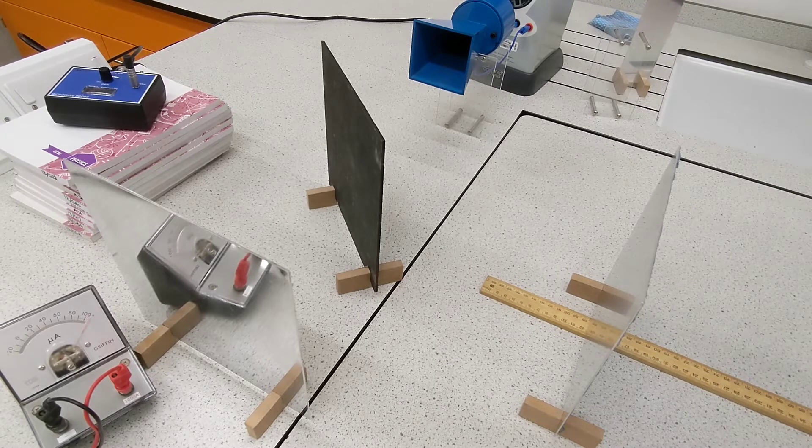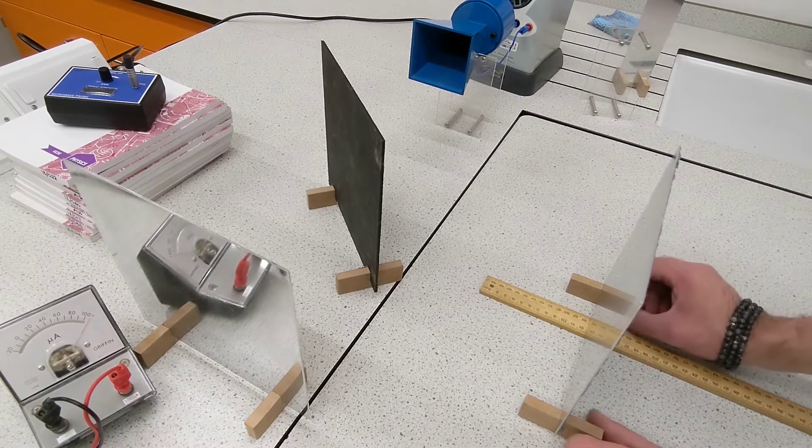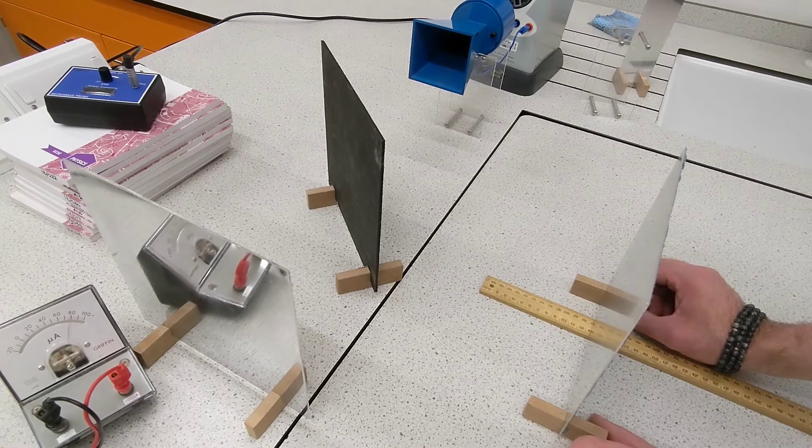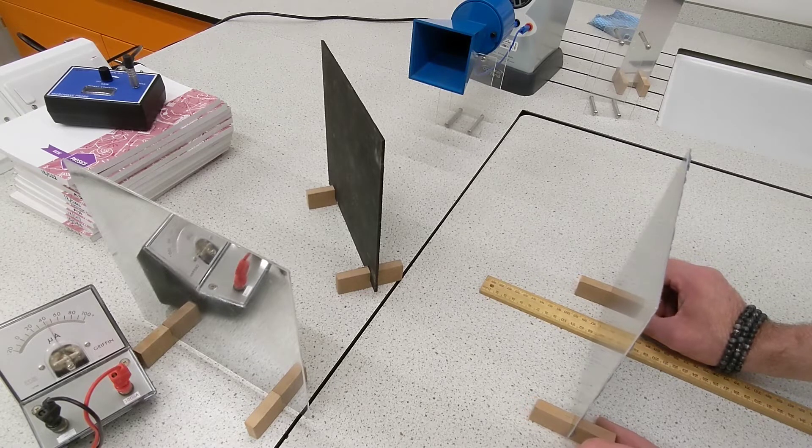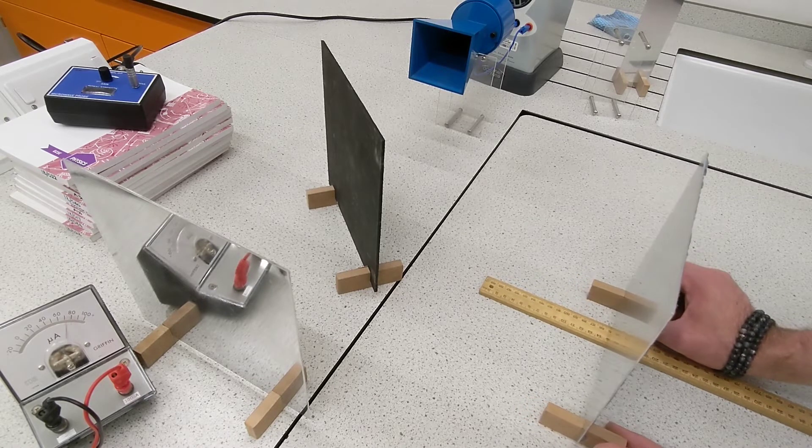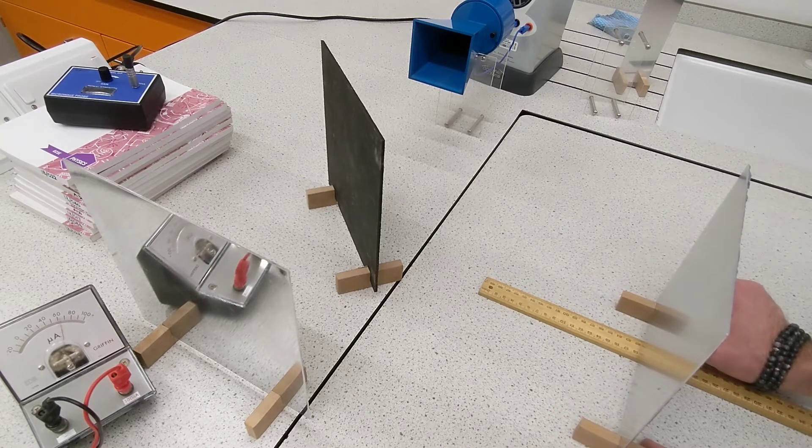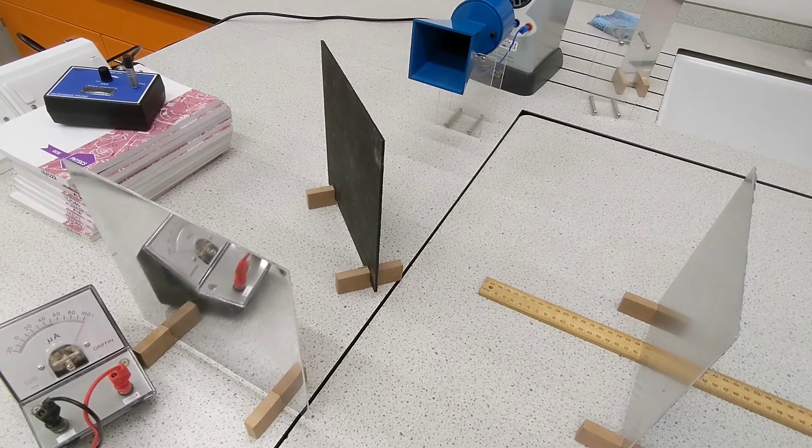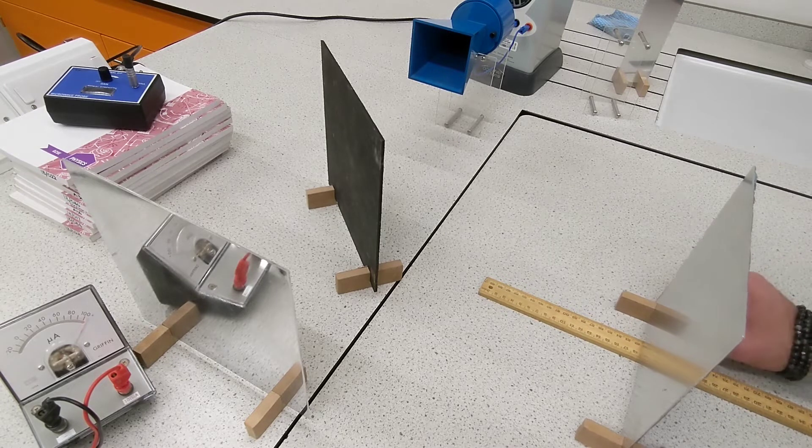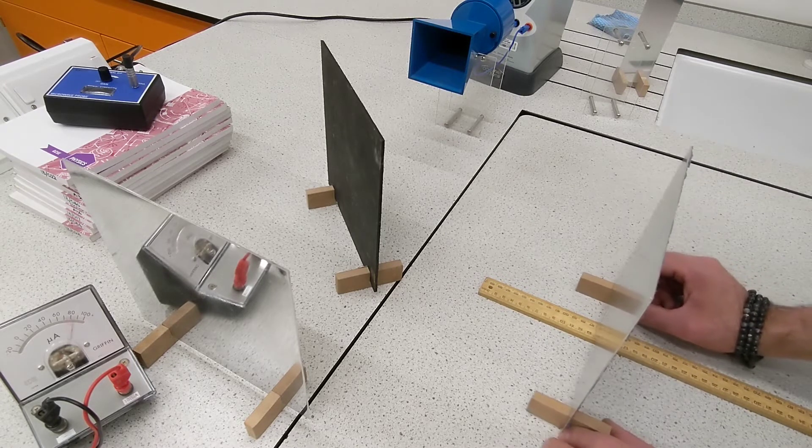As I move the mirror, you can see that the numbers on the microammeter change. They drop down but then they increase again and they drop down and increase again, drop down, increase again, drop down, increase again in a fairly regular pattern. And we can use this to determine the wavelength of the microwaves.